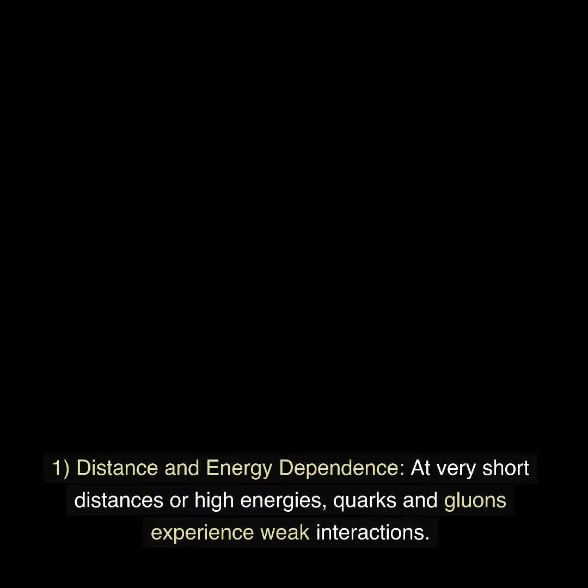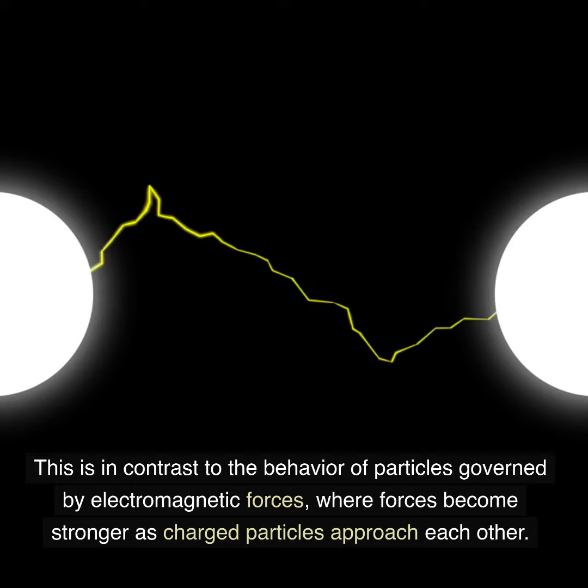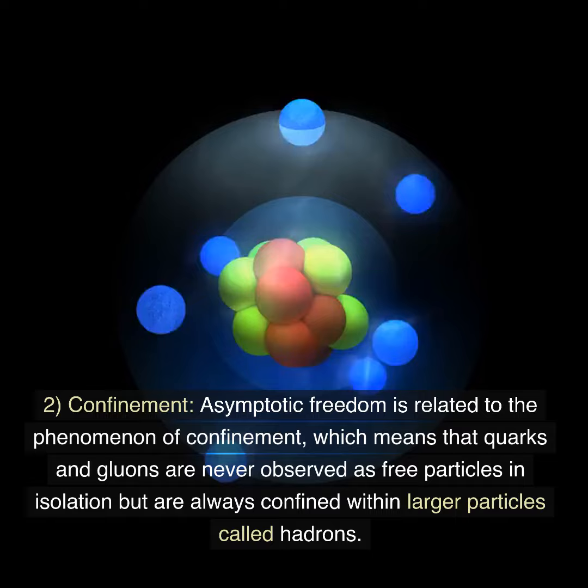Key points about asymptotic freedom include: 1. Distance and energy dependence. At very short distances or high energies, quarks and gluons experience weak interactions. This is in contrast to the behavior of particles governed by electromagnetic forces, where forces become stronger as charged particles approach each other.